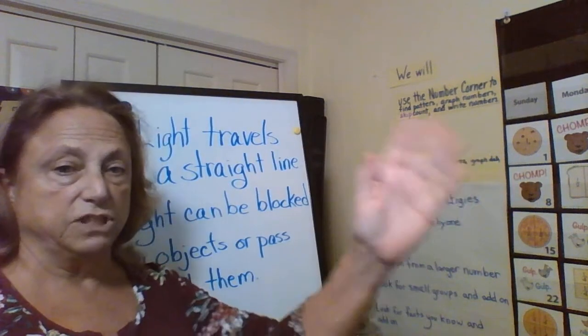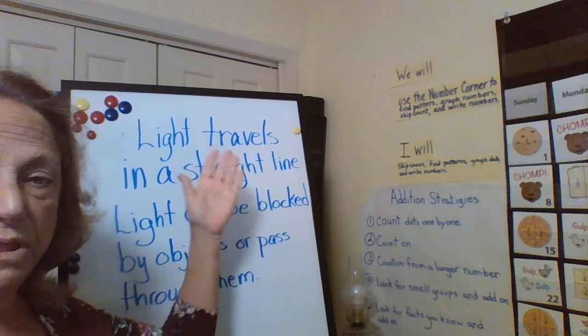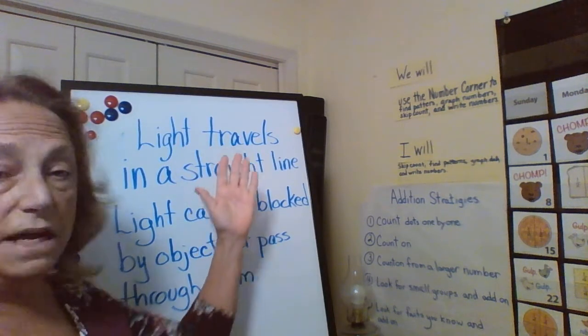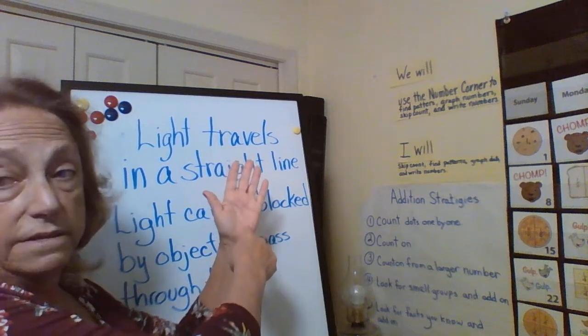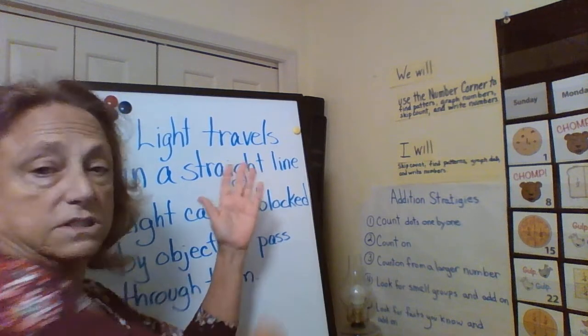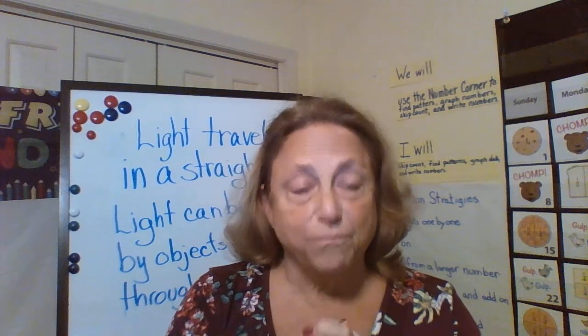I probably could make some shadows back here — and I can. But they're just not very big because we don't have a very big light. My hand can block that straight line of light; the light can't go around my hand, and it's blocked, so it makes a shadow. That's what we're going to be working on today. You are going to do a great job, and we'll be back on the next slide.